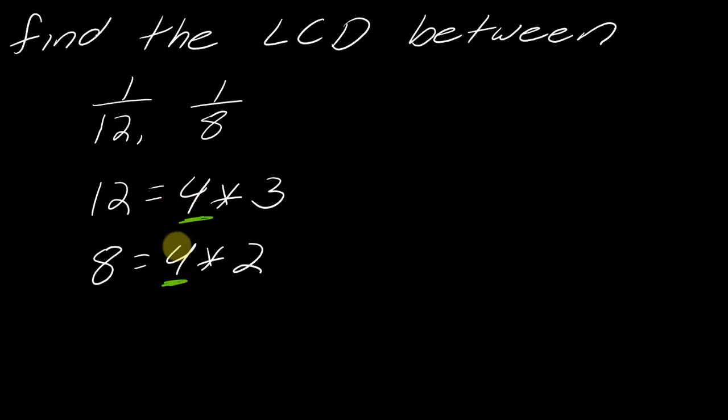The largest number that divides both is how you want to write out the factorizations. By acknowledging what that largest factor is, that will make sure you don't repeat it in the least common denominator. If you don't choose that right number, you end up repeating factors. So the LCD is 4 times 3 times 2, which equals 24.